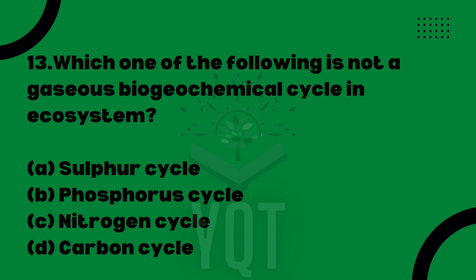Which one of the following is not a gaseous biogeochemical cycle in an ecosystem? You will learn gaseous-type and sedimentary-type cycles. Option A: sulfur cycle. Option B: phosphorus cycle. Option C: nitrogen cycle. Option D: carbon cycle. In NCERT, sulfur and phosphorus are sedimentary cycles. The correct answer is Option B — phosphorus cycle.